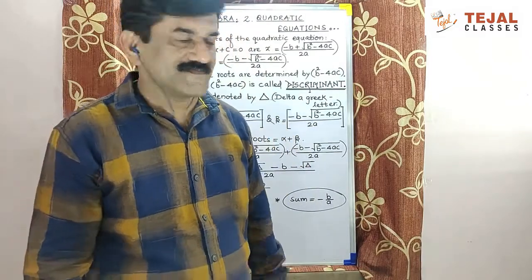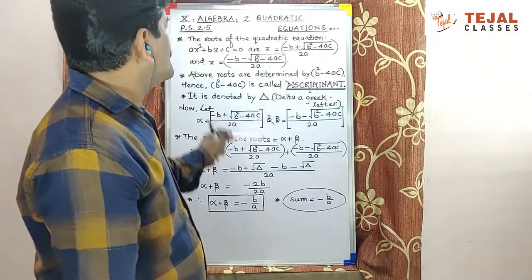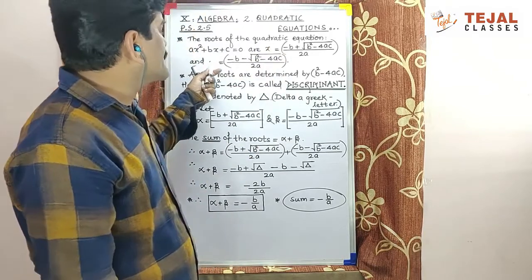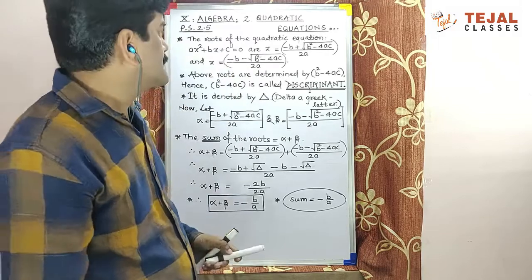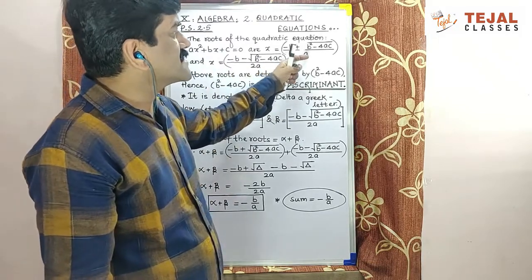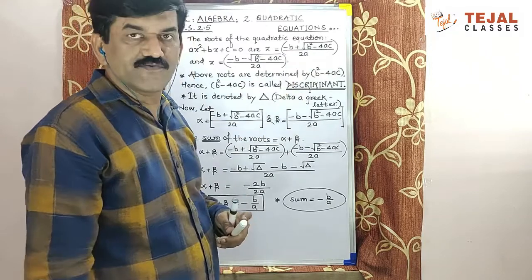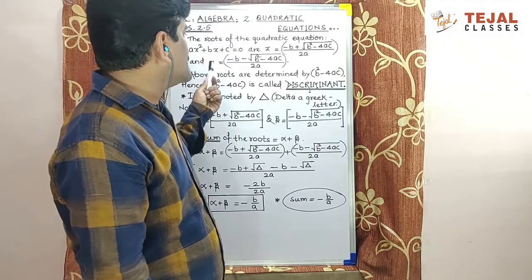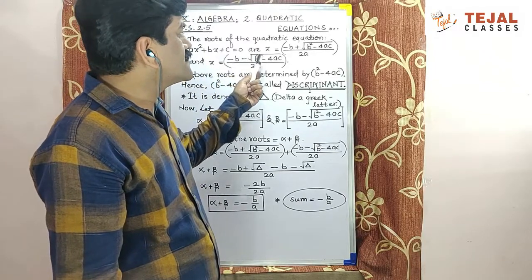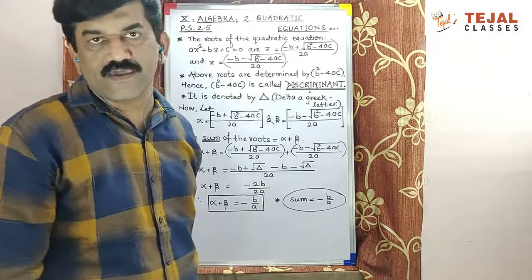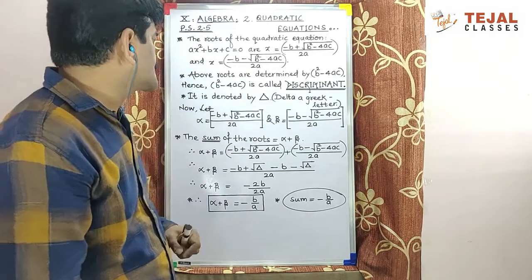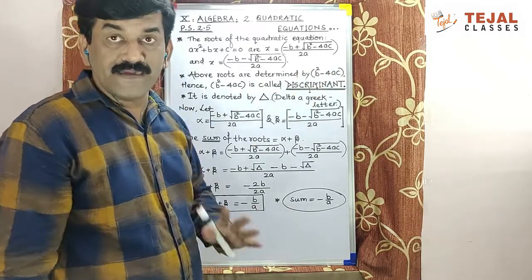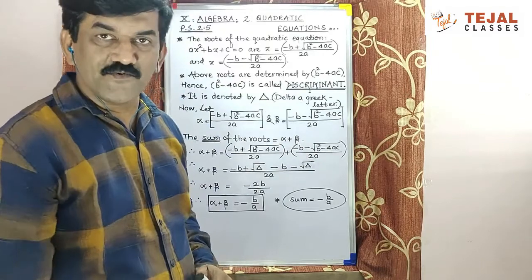Listen, the roots of the quadratic equation ax² + bx + c = 0 are x = (-b + √(b²-4ac))/2a and x = (-b - √(b²-4ac))/2a. You know what? These both roots are determined by b²-4ac mainly.